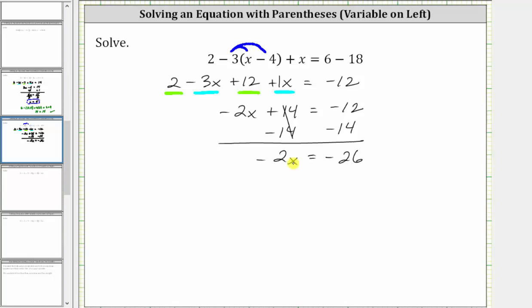For the last step, negative two x means negative two times x. And therefore, to solve for x, we undo the multiplication by dividing both sides by negative two. Simplifying, negative two divided by negative two simplifies to one. One times x is x. X is equal to negative 26 divided by negative two, which is equal to positive 13.